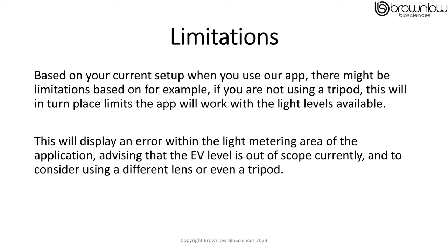Based on your current setup, when you use our app there may be limitations — for example, if you are not using a tripod, this will in turn place limits on the app, and it will work with the current light levels available. This will display an error within the light metering area of the application, advising the EV level is out of scope and to consider using a different lens or even a tripod.